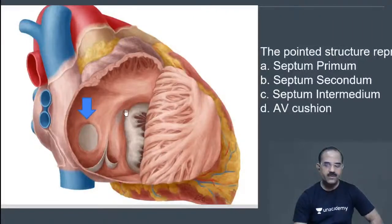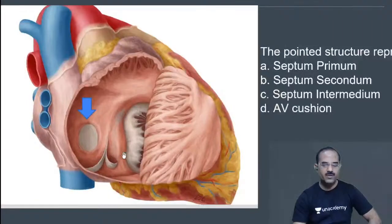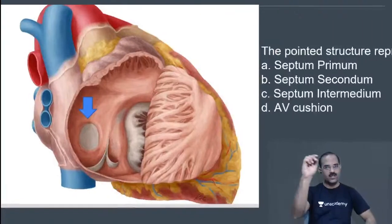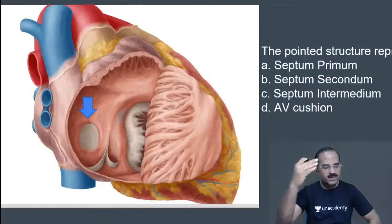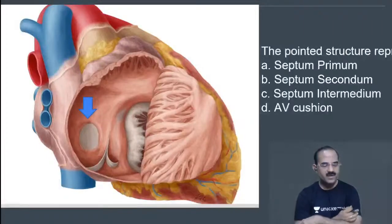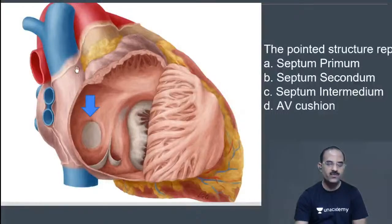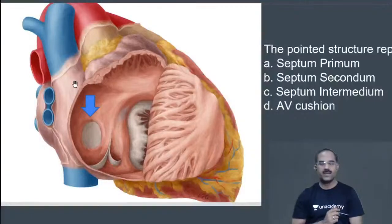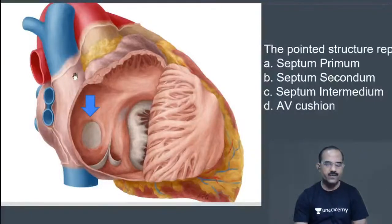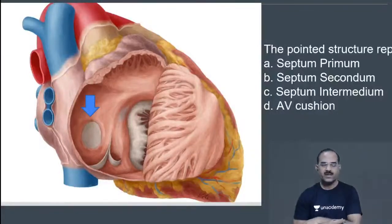What is this triangle? This is the triangle of Koch — K-O-C-H — and within it lies the AV node. The SA node lies at the junction of the SVC with the right atrium.